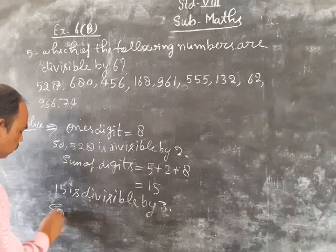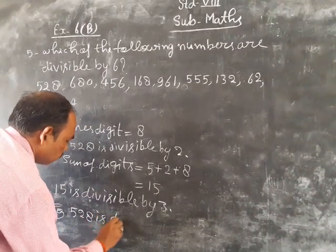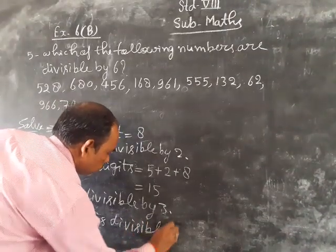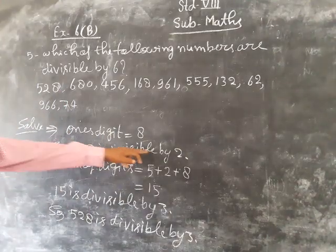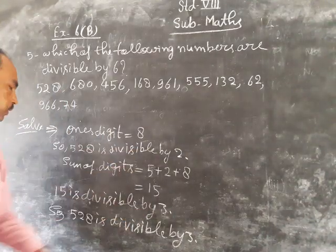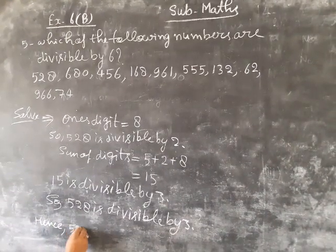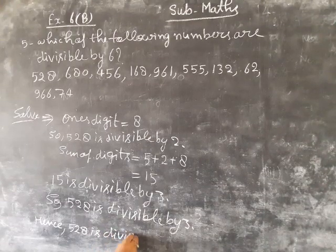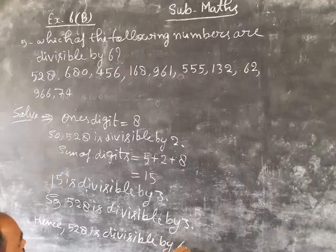This number is divisible by both 2 and 3. Therefore, 528 is divisible by 6.